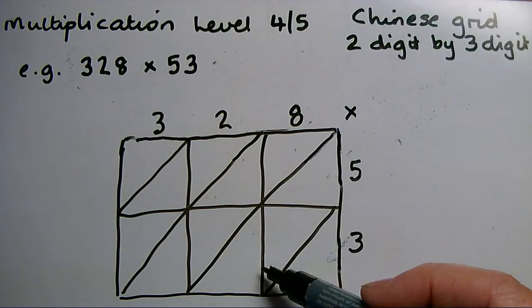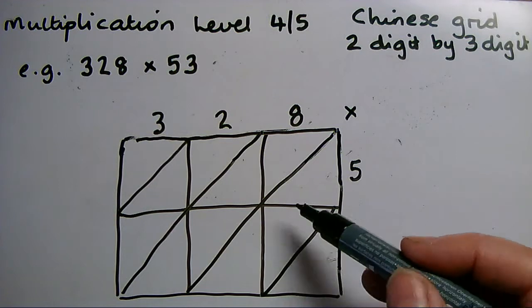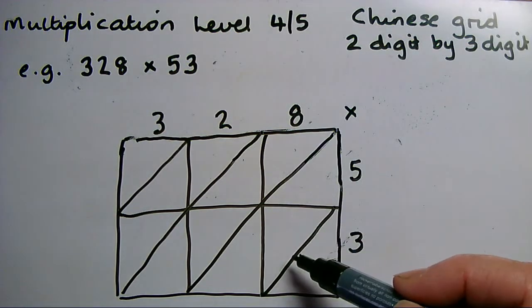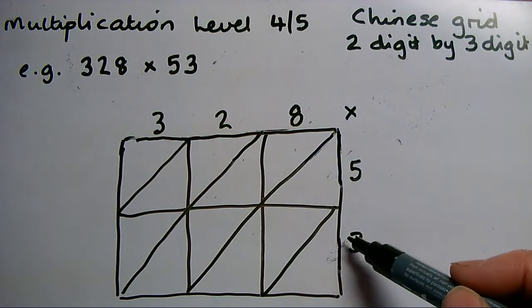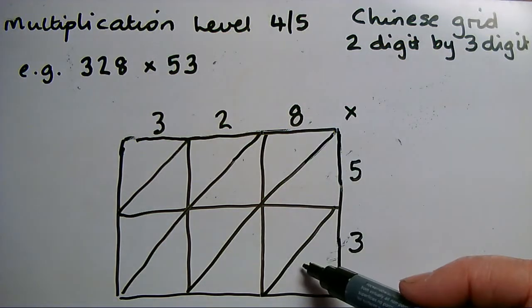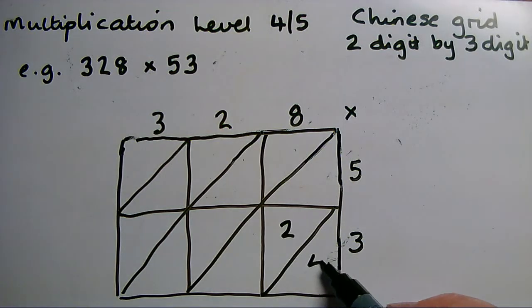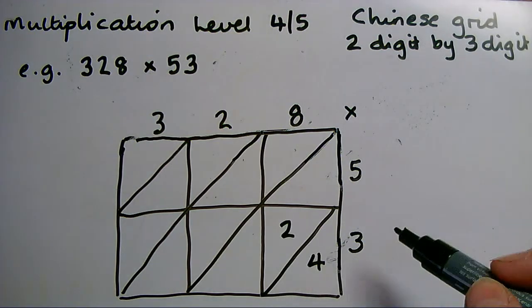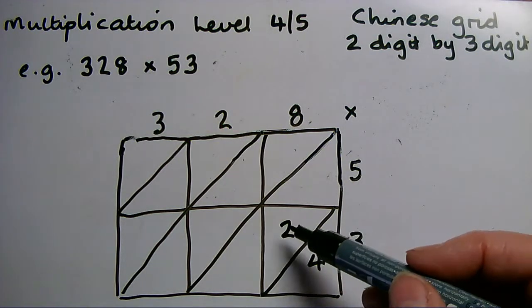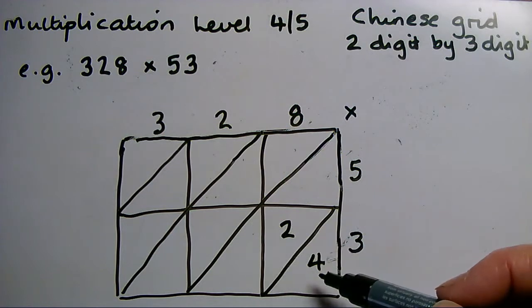It's still a multiply grid and in each of these squares I'm going to multiply the number at the side by the number at the top. So in this first one I've got 3 multiplied by 8. 3 eights are 24, and I split that and put half of the number in each of the two triangles: 2 at the top, 4 at the bottom, the larger place value in the top, the smaller place value in the bottom.